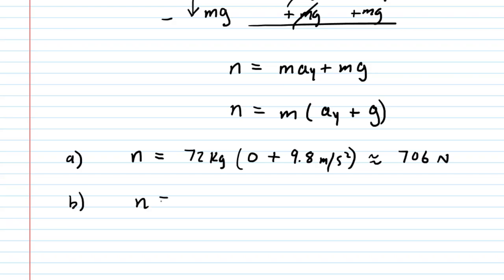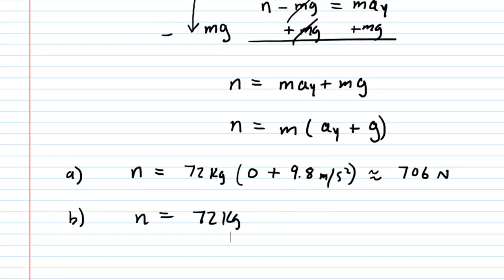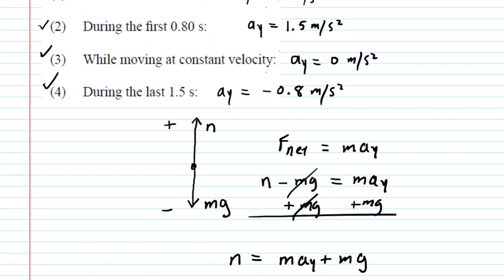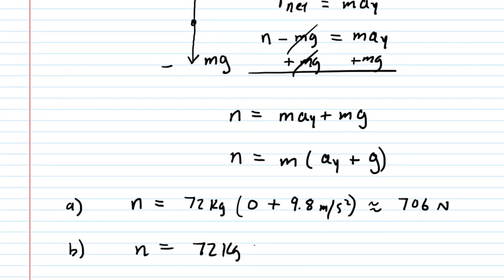In part b, we're going to do a very similar computation except for the acceleration in the y-direction. Remember that we had calculated that in part two of this problem to be 1.5 meters per second squared. And this turns out to equal around 814 newtons.